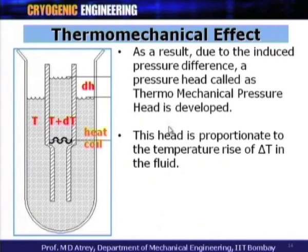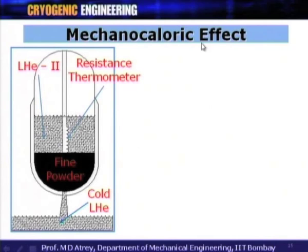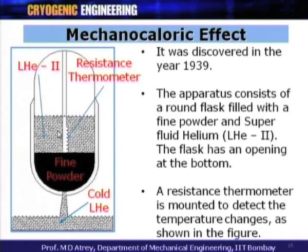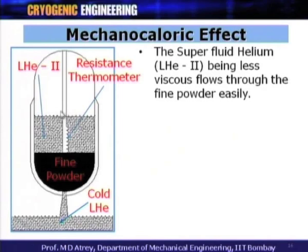The next effect is the mechanocaloric effect, discovered in 1939. Here, mechanical action gives rise to a caloric or thermal effect. The apparatus consists of a round flask filled with fine powder and superfluid helium II at the bottom, with a small opening at the bottom and a resistance thermometer to detect temperature changes. The superfluid, being zero viscous, travels through the fine powder because the resistance of the fine powder is not enough to stop it.